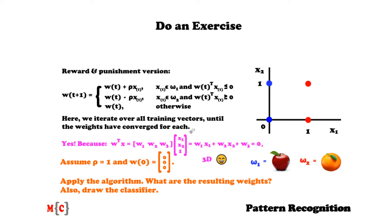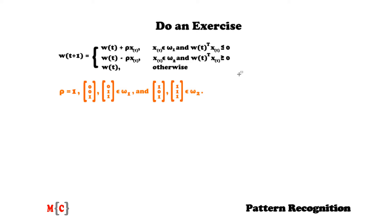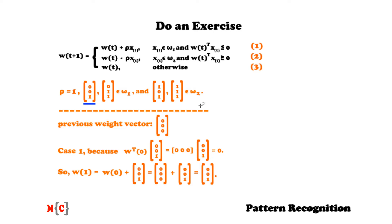Alright, so fasten your seatbelts, because we're going through some iterations. I've repeated the algorithm here and repeated the objects we have, as well as the learning rate. During the first iteration, we start with the initial weight vector containing only zeros. We take our first training vector, which is an omega1 element, and check whether the first case condition holds. We multiply a row vector of zeros with the column vector (0, 0, 1), which equals 0 — so we are in case 1 and perform the correction: we add the training vector to our initial vector, resulting in the weight vector (0, 0, 1).